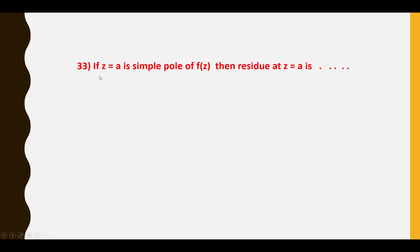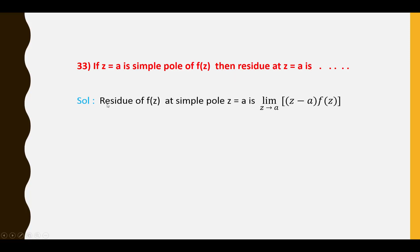Thirty-third question: If Z = a is a simple pole of F(Z), then the residue at Z = a is: Res[F(Z), a] = lim(Z→a) [(Z − a)·F(Z)].